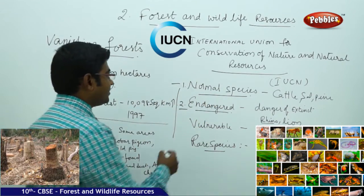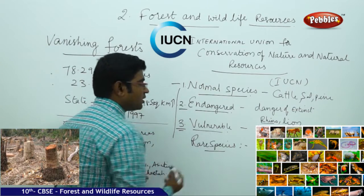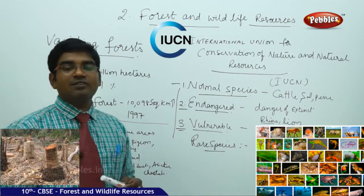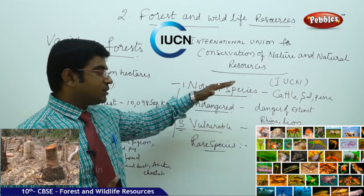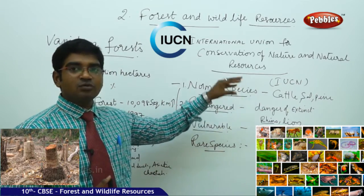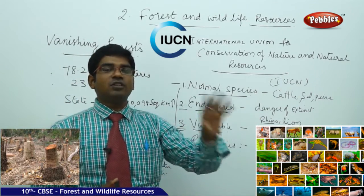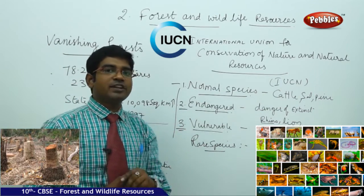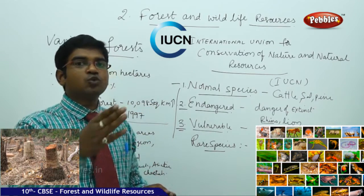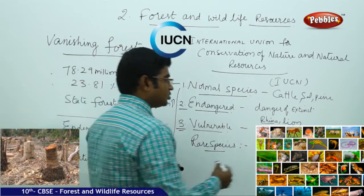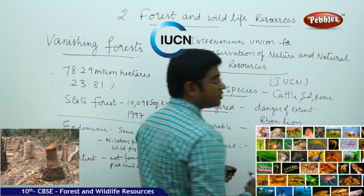The third category is vulnerable. These species were once normal, then faced danger of extinction, and now their numbers have rapidly declined to a state where they are very soon likely to disappear. Examples of vulnerable species are blue sheep and Gangetic dolphins.